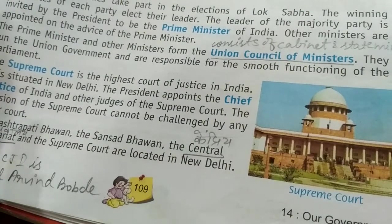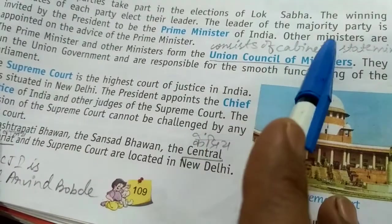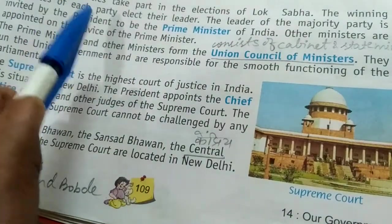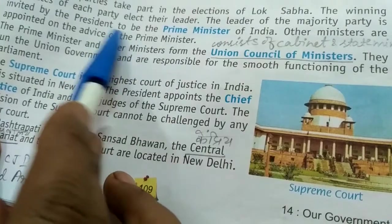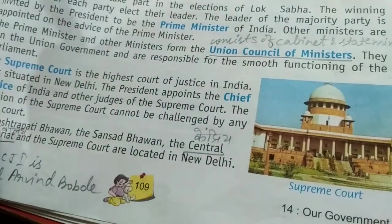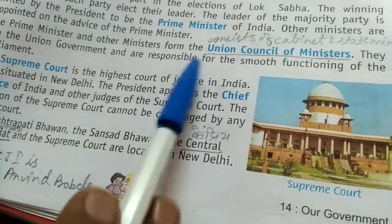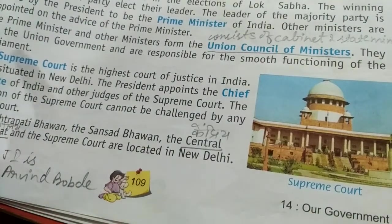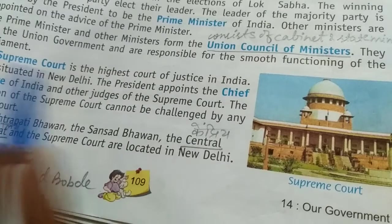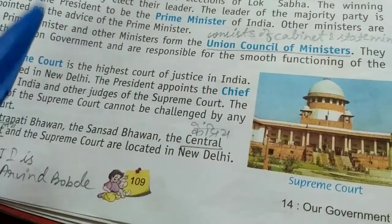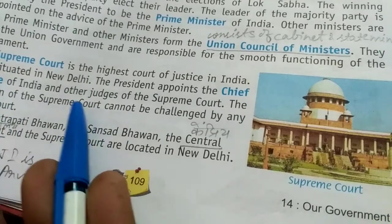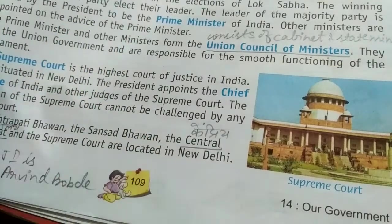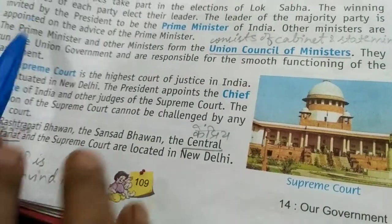Other ministers are appointed on the advice of the Prime Minister. So ministers like the Agricultural Minister, Home Minister, Defense Minister, Educational Minister, HRD Ministry — all the different portfolios and ministries — their ministers are appointed on the advice of the Prime Minister.